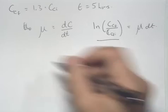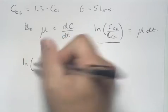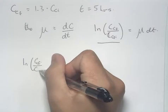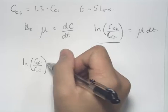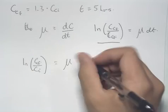So in this case, we can say log of cell concentration over initial cell concentration, final cell concentration over initial cell concentration, is equal to the specific growth rate times T.